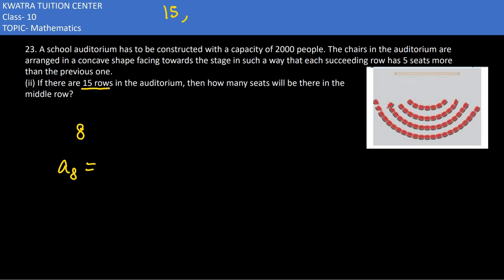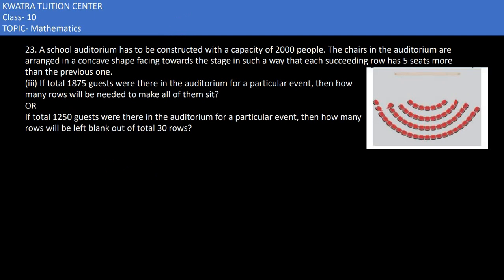Using a8 = a + 7d, with a = 15 and d = 5: 7 into 5 is 35, and 35 plus 15 results in 50. So the middle row has 50 seats.